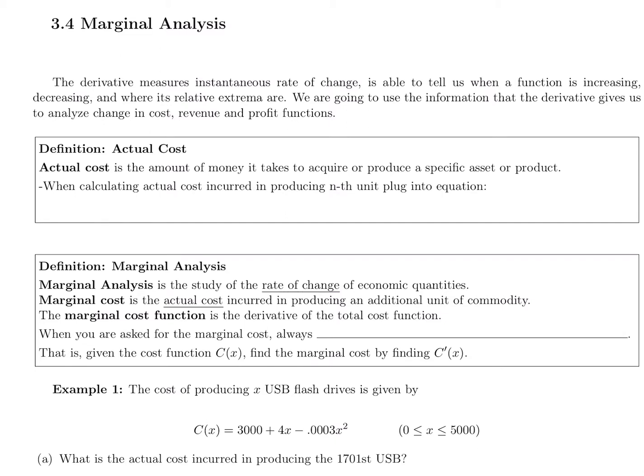We want to remember the derivative measures instantaneous rate of change, which tells us when we're increasing, decreasing, and gives us some relative extrema. Now we're going to apply these sign charts and critical numbers into analyzing cost, revenue, and profit functions. We're going to use this as a decision-making tool, using the derivative to tell us what will work best for a company.